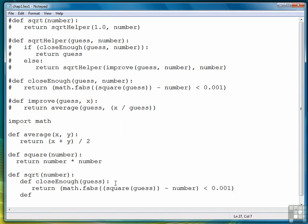After close enough, then we define improve. And it also only requires one parameter, because it has access to number within the environment of the square root function.